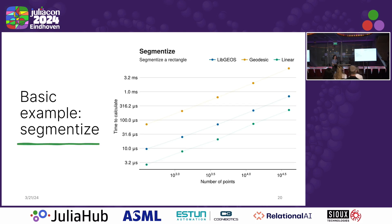Now, benchmarks — of course, we're in Julia, we've got to have benchmarks. This is an example of that segmentization I was showing you. The blue line here is libgeos, that's a C library wrapper in Julia. The green line is doing the exact same thing as libgeos but in Julia, and we get rid of a lot of overhead from both the C library implementation and from calling into C. And then the beauty of choice: we have this super-fast algorithm. If you want exactness, you can call the orange line, which is geodesic — it takes longer but is more exact.